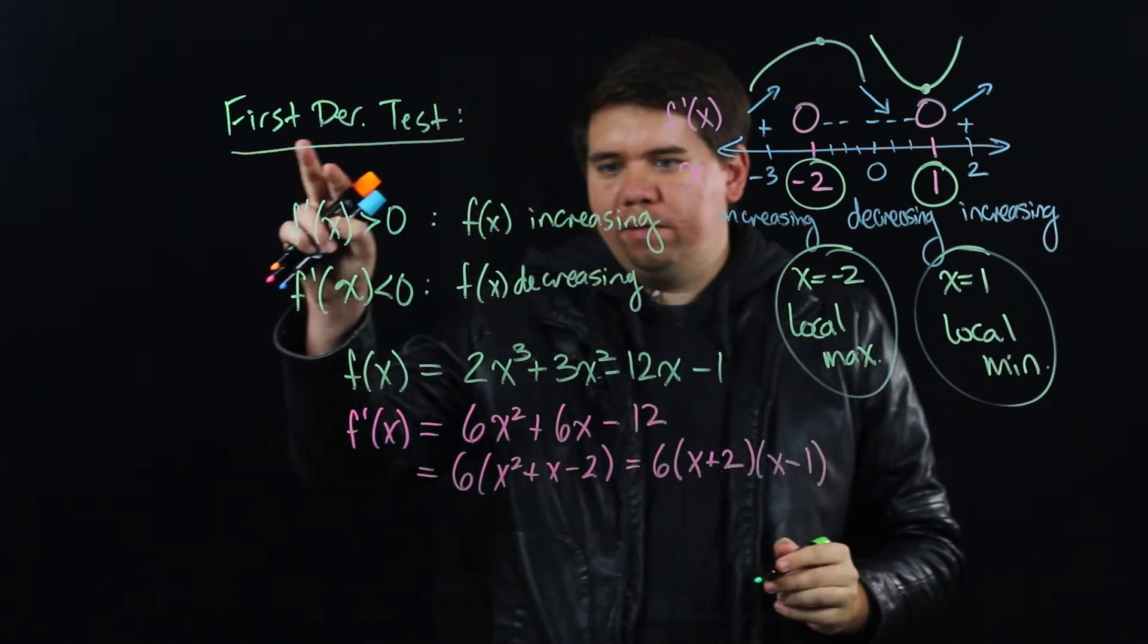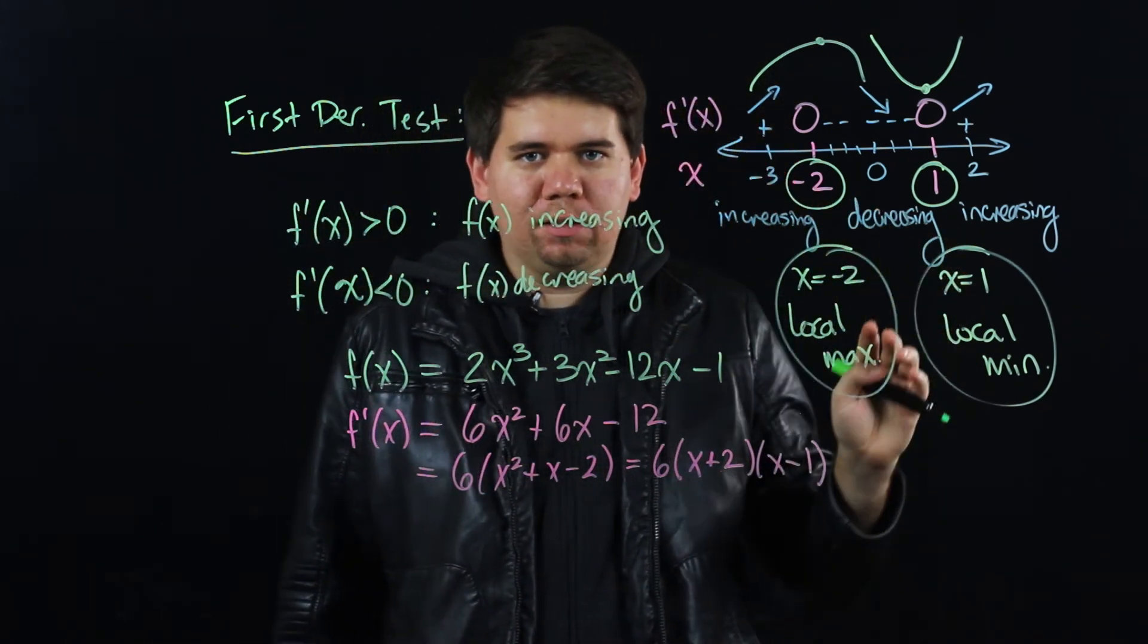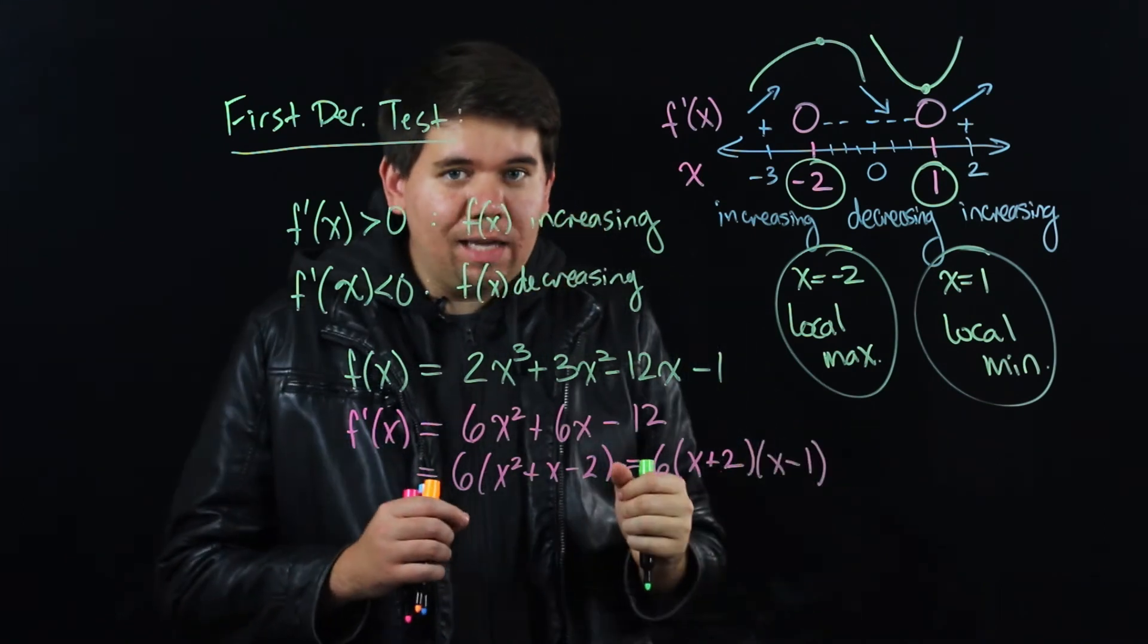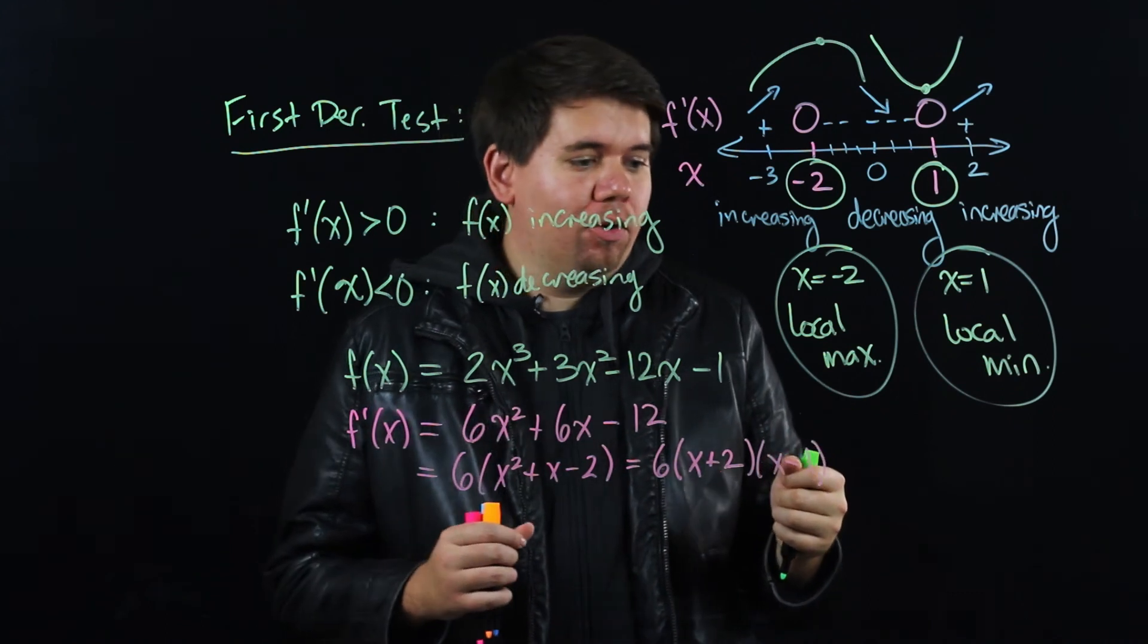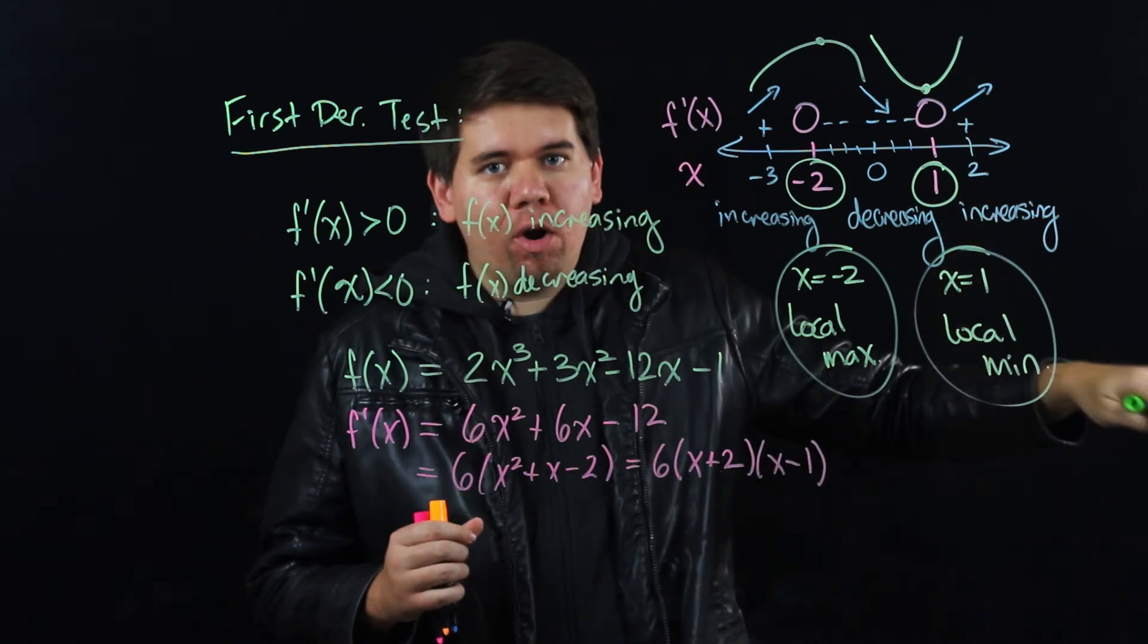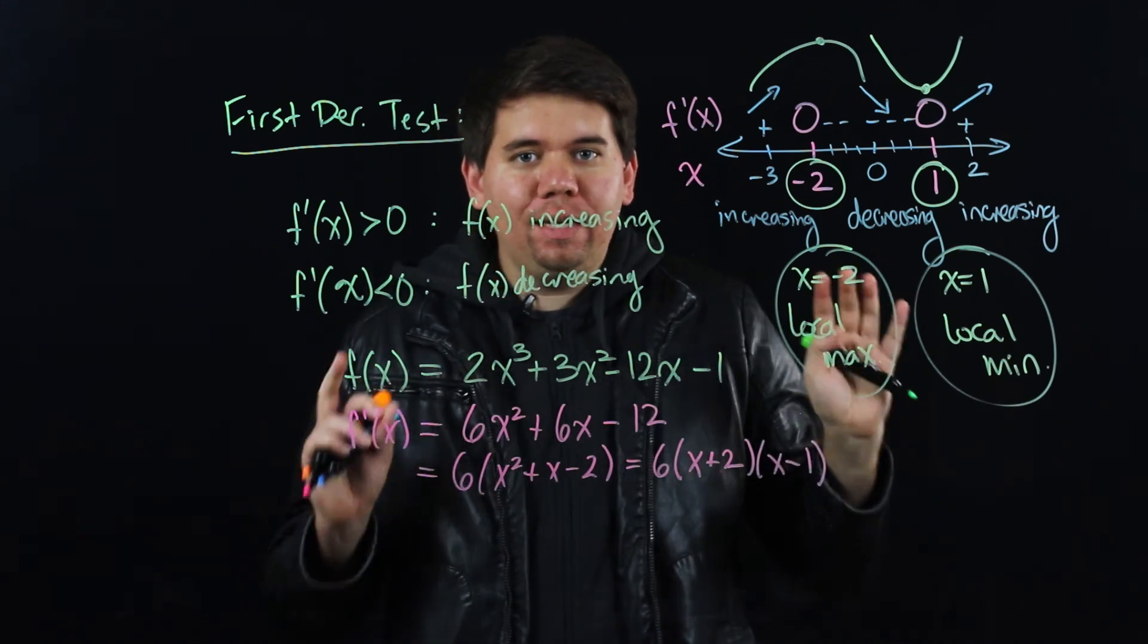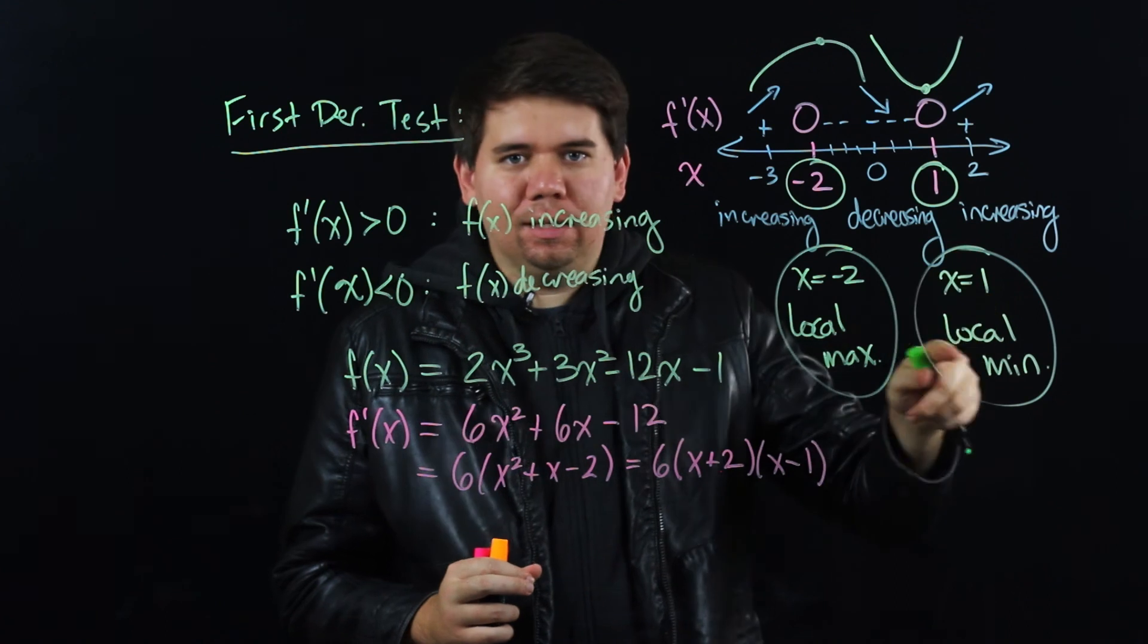So that's all it is. The first derivative test is giving you a way to find the local minimums and local maximums of your function. Now it's going to take a little bit more work to figure out is that local maximum actually an absolute maximum, or is that local minimum really an absolute minimum, or does it get smaller somewhere else? But at least you know locally this is a maximum and this is a minimum.